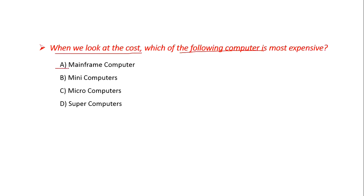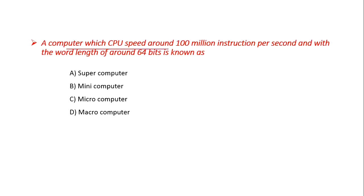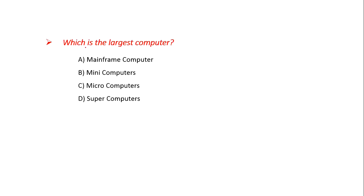When we look at cost, which of the following computer is most expensive? Option A: Mainframe, B: Mini Computer, C: Micro Computer, D: Super Computer. The answer is D: Super Computers — they are the most costly. Which of the following is the most powerful computer? Option A: Mainframe, B: Mini, C: Micro, D: Super. Most powerful computers are D: Super Computer. A computer with CPU speed around 100 million instructions per second and word length of around 64 bits — the answer is A: Super Computer. Which is the largest computer? Option A: Mainframe, B: Mini, C: Micro, D: Super. The answer is A: Mainframe Computer.